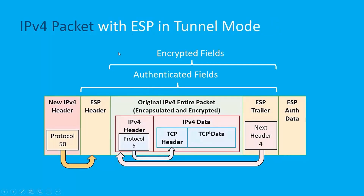Now let's compare that to tunnel mode, which is used in VPN tunnels. In this case, the entire original IPv4 packet is encapsulated and encrypted — not only the IPv4 data with the TCP header and TCP data, including application layer data, but the original IPv4 header is encrypted along with the ESP trailer. Notice that the ESP trailer says the next header to point to will be the IPv4 header, because there's an original IPv4 header.